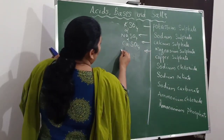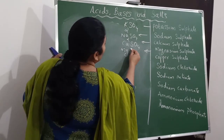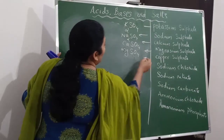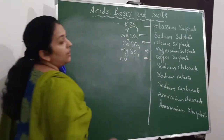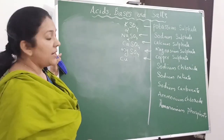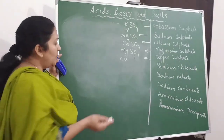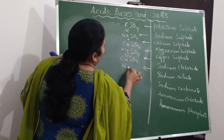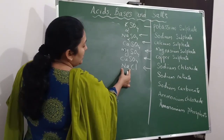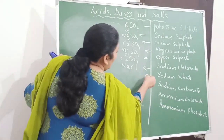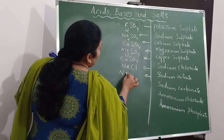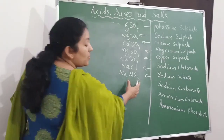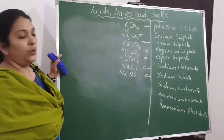Sodium chloride is NaCl — sodium has valency 1 and chlorine also has valency 1. Sodium nitrate: sodium has valency 1 and nitrate is a polyatomic ion also having valency 1, therefore NaNO3. So we will write all the names of the bases and acids first, then we will decide the nature of the salts.